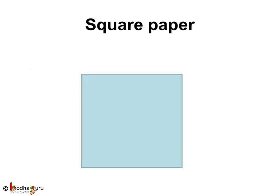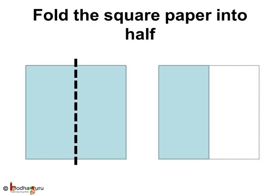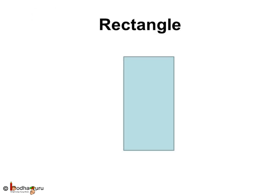Let us do an interesting activity with a piece of paper. Take a square piece of paper. It has four sides, all of which are of same length. Now, we fold it into half. What is its shape now? Now, all four sides are not the same. It has two long and two short sides. Yes, it is a rectangle.